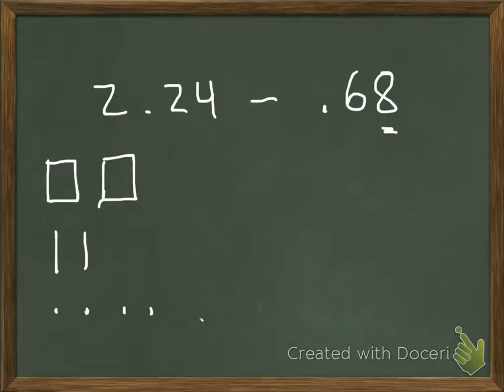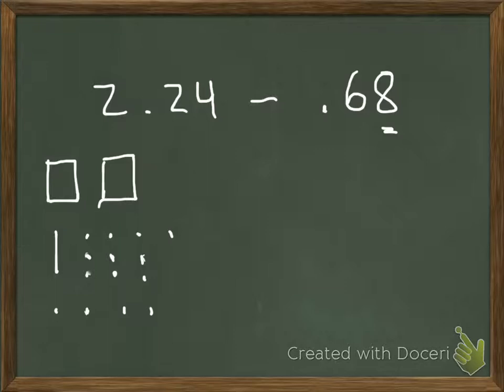So I need to borrow from the tenths. Since I don't have enough hundredths, I take that 1 tenth away and replace it with 10 hundredths. Now that I have those 10 hundredths replacing the tenths block, I have a total of 14 hundredths. I can now take 8 hundredths away from the 14 hundredths — I subtract 4 and then 4 more — and I'm left with 6 hundredths.